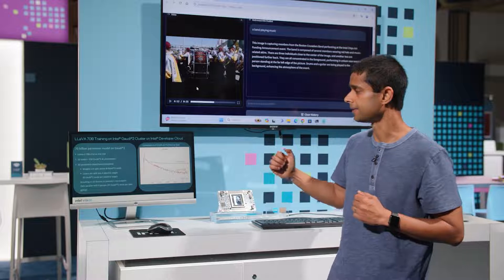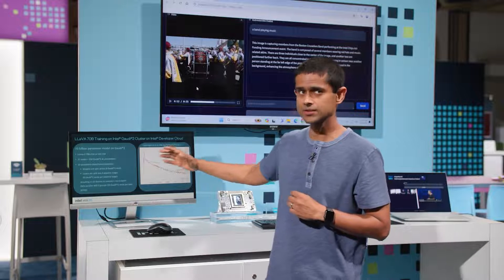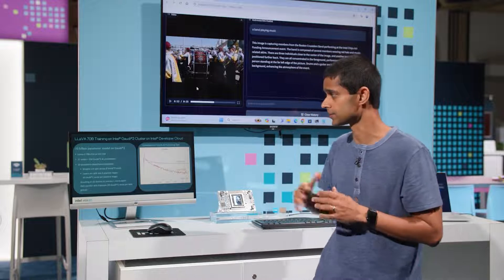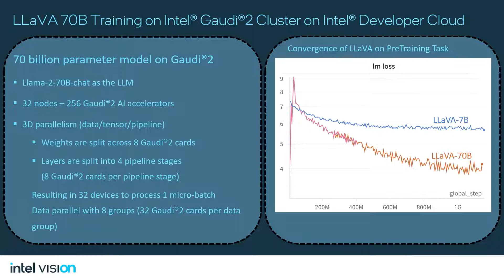Our team has been pushing the limits of what these multimodal LLMs can do. We've been training a 70 billion parameter model on a Gaudi 2-based cluster in the Intel Developer Cloud. A model at this scale cannot fit into a single Gaudi 2 AI accelerator card, so we use full 3D parallelism, distributing model weights and layers across different Gaudi 2 cards. As we scale from 7 billion to 70 billion parameters, our pre-training curve shows better convergence.